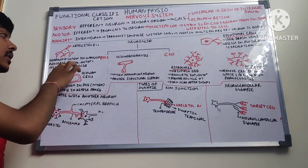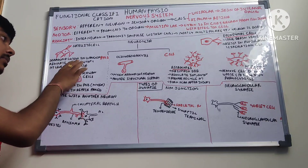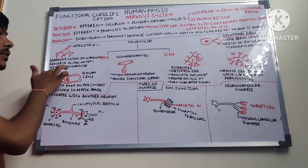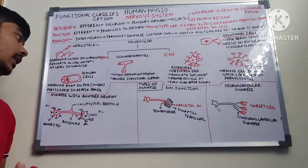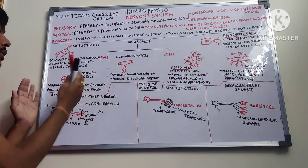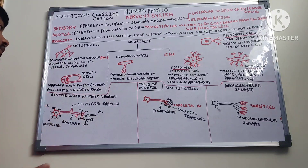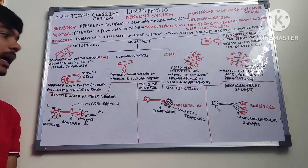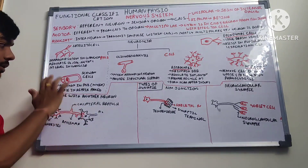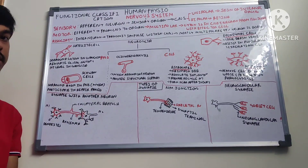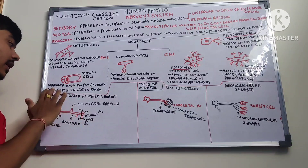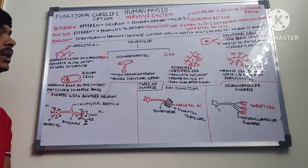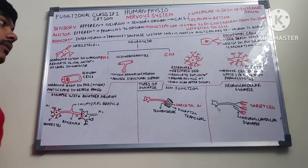Satellite cells surround the cytone in ganglia, regulating oxygen, carbon dioxide, and various other nutrients, and they also control the levels of neurotransmitters within the ganglia. Schwann cells surround the axon in the PNS — also called the myelin sheath. They are hollow from inside, lipid in nature, and they participate in the repair process of the neuron.